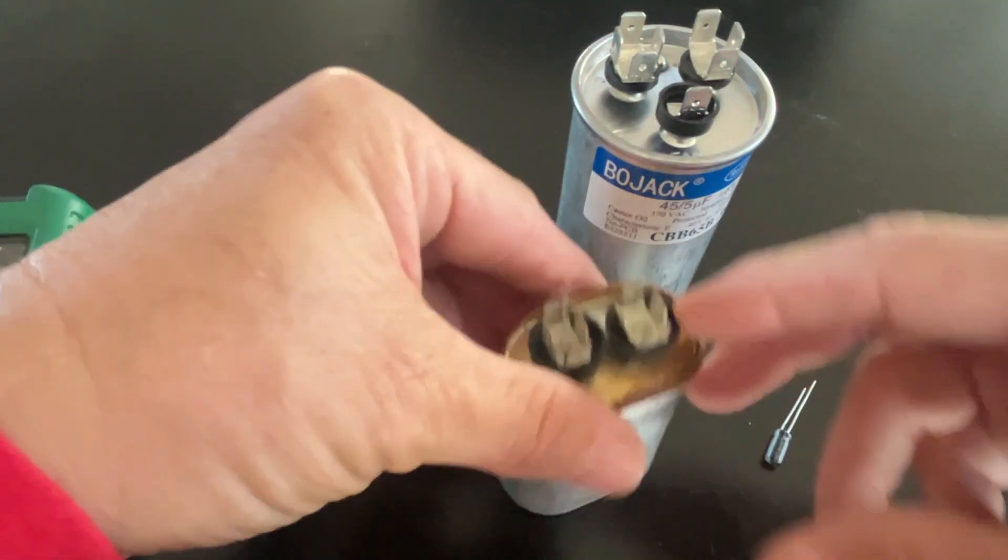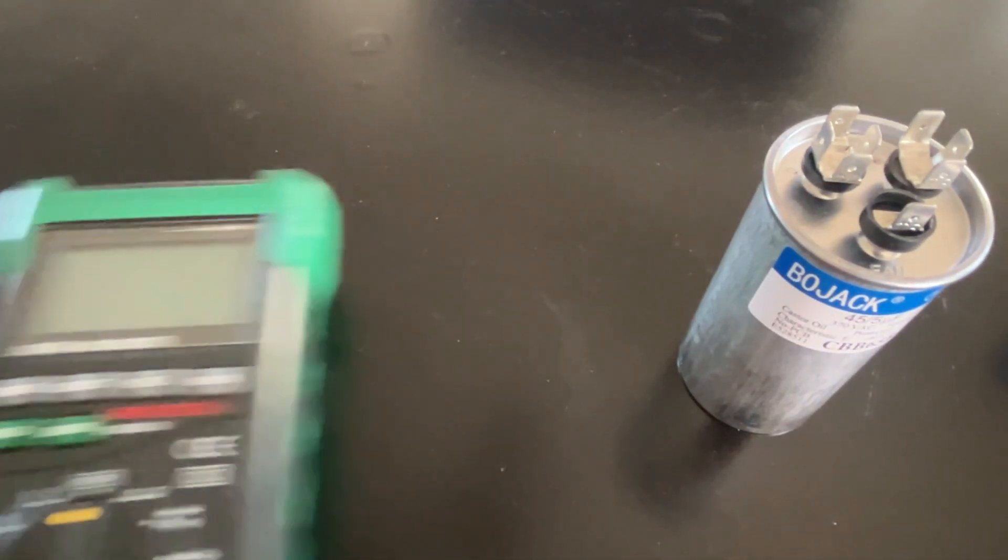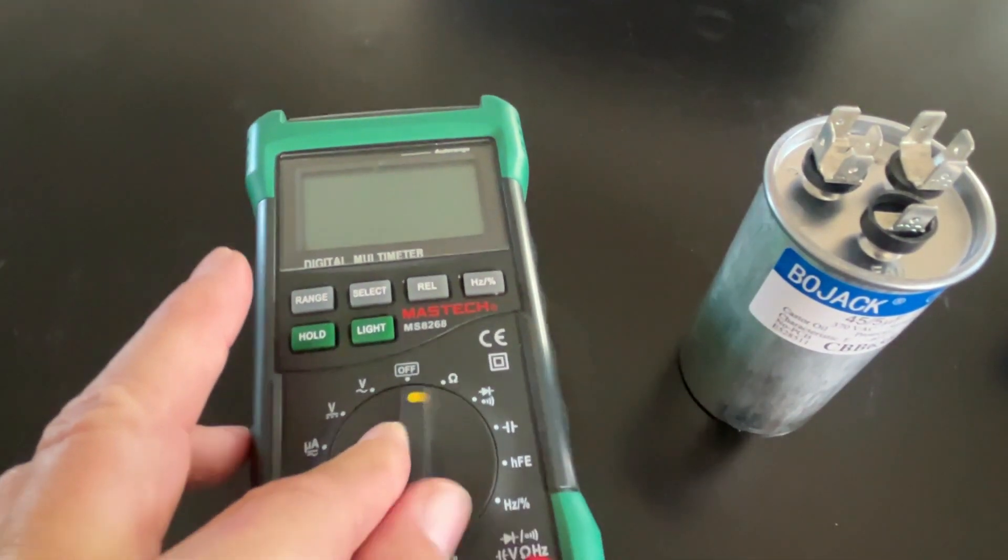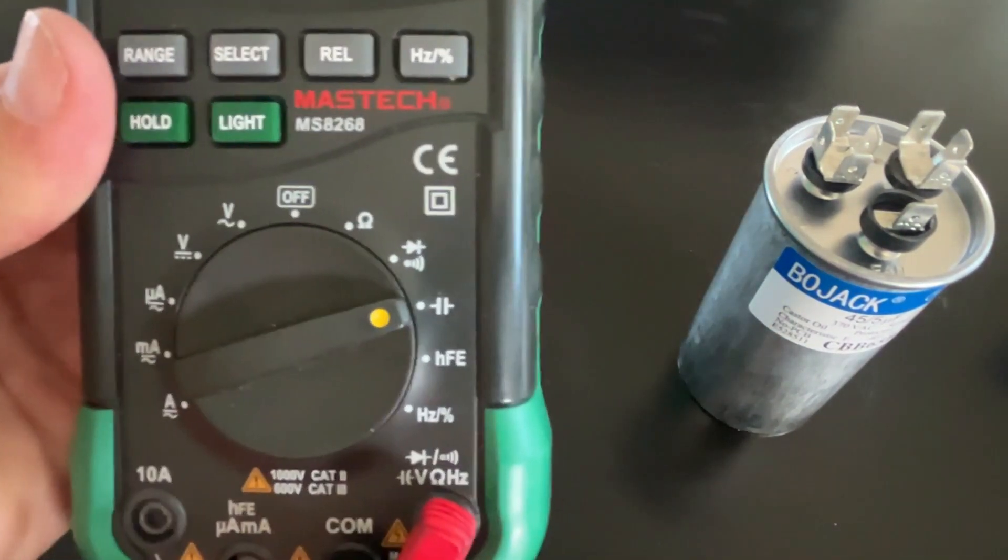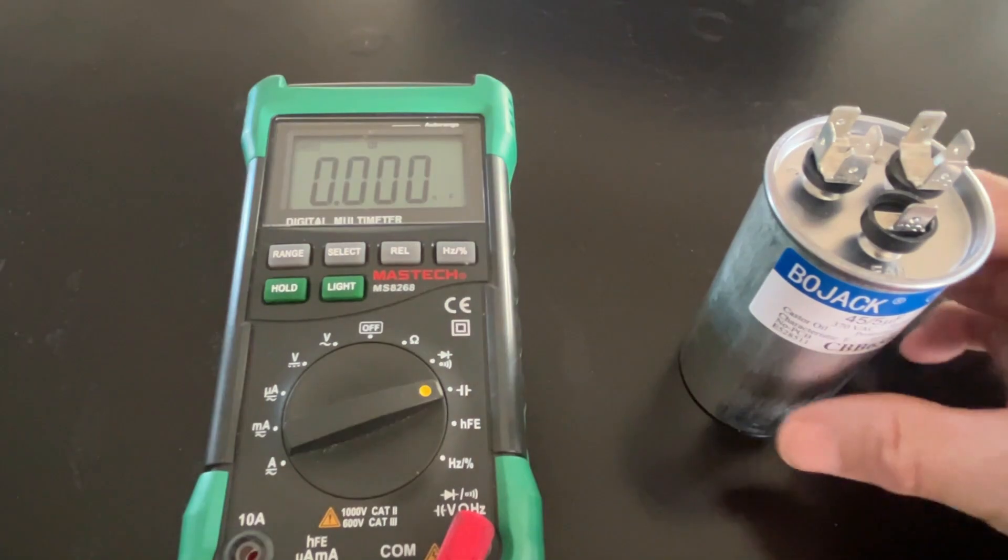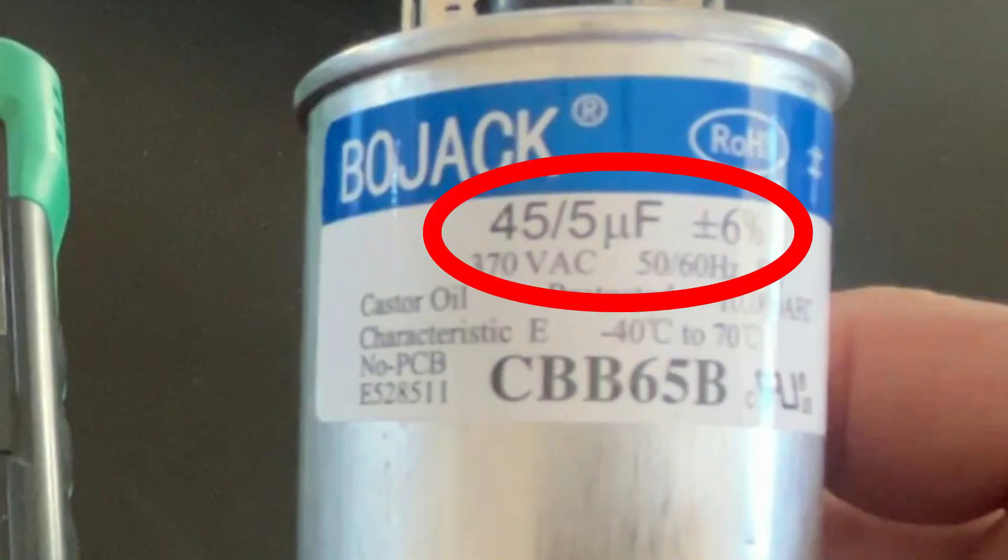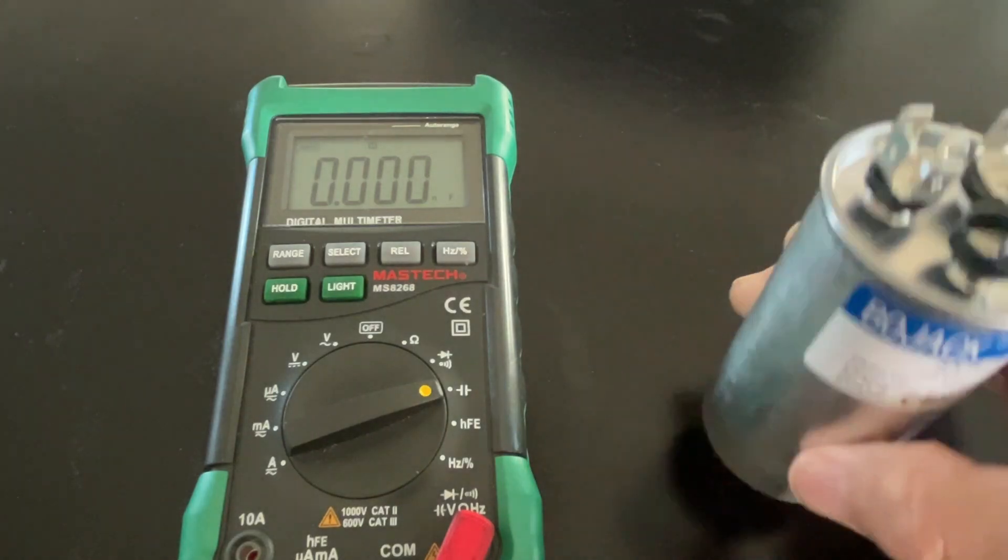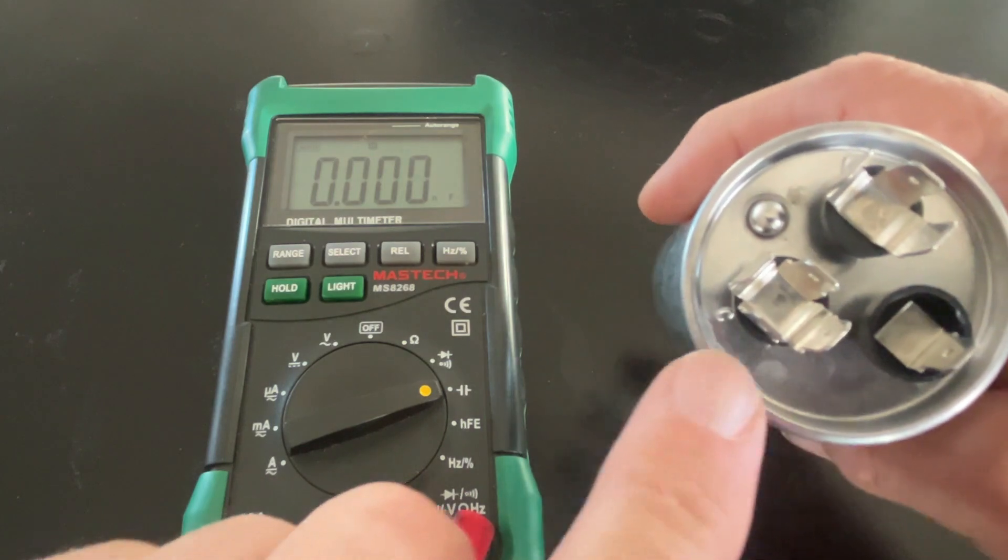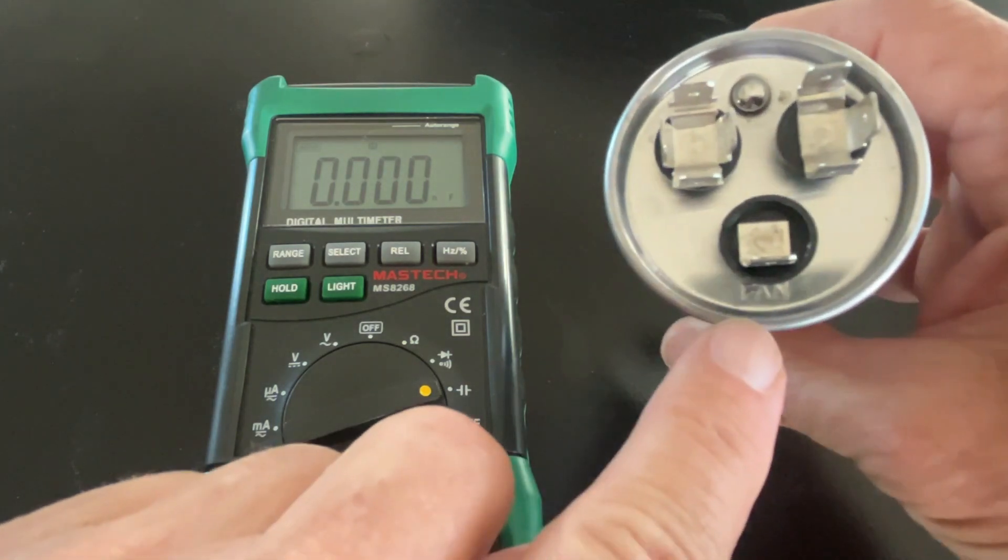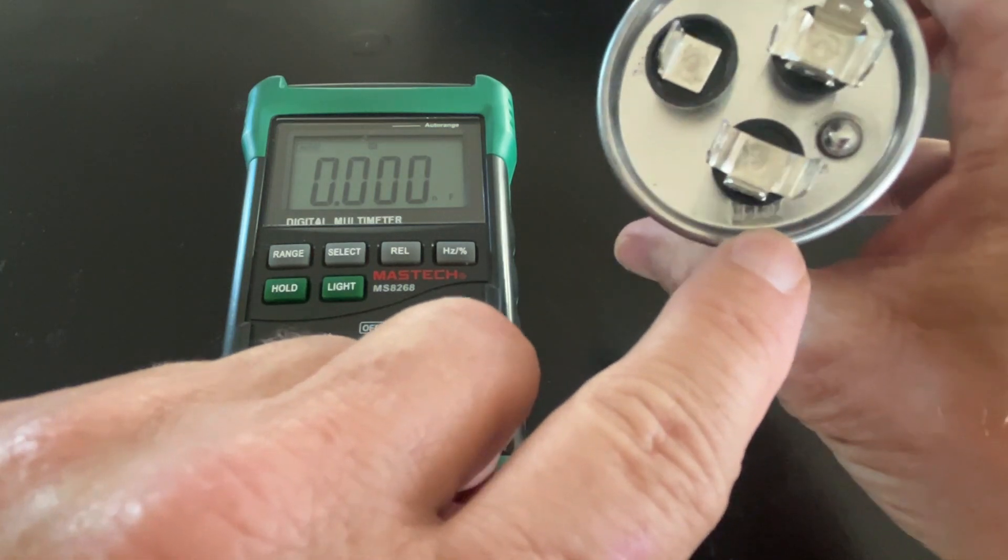All right, so let's start with this air conditioner dual run capacitor. We'll turn this to the capacitance setting right there. On this one it's a 45 by 5 microfarad plus or minus six percent, so we need to find the common.